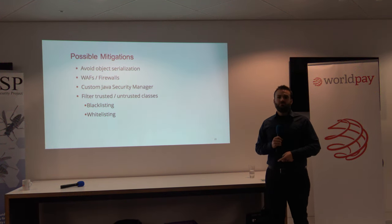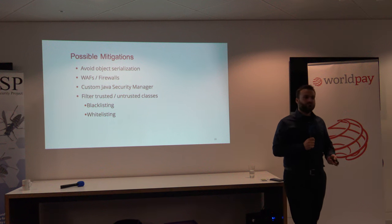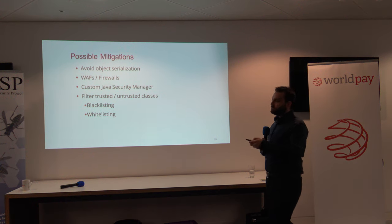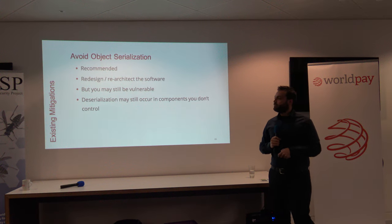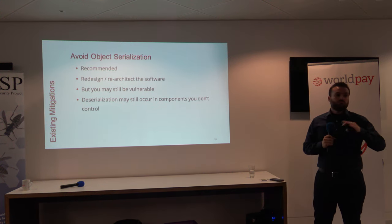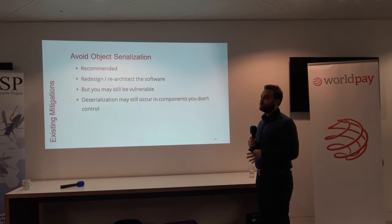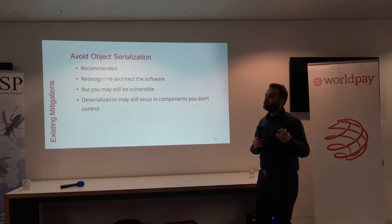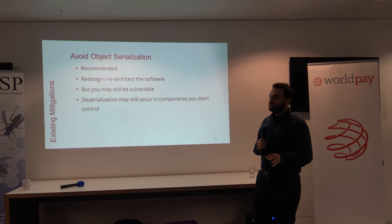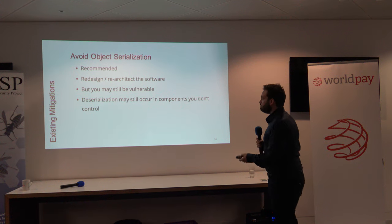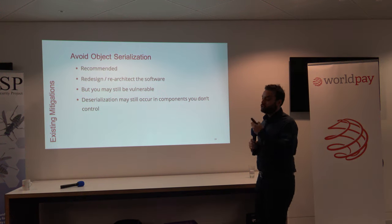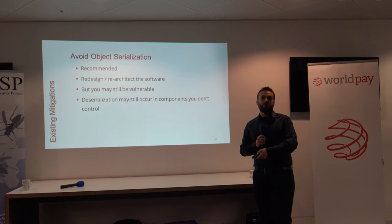We have been talking with customers that have 50,000 to 100,000 live instances in production, or maybe 50,000 different Java applications. The recommended way of solving the problem is to redesign and re-architect your application — avoid native Java object serialization at all costs. But this will take time and money, and you may still be vulnerable because you don't control all the code that you can re-architect. You can re-architect your own application but not the server.